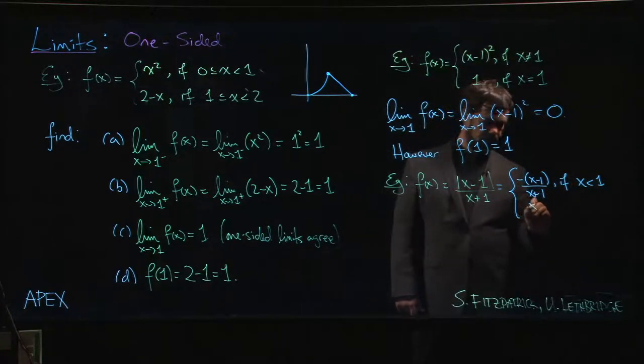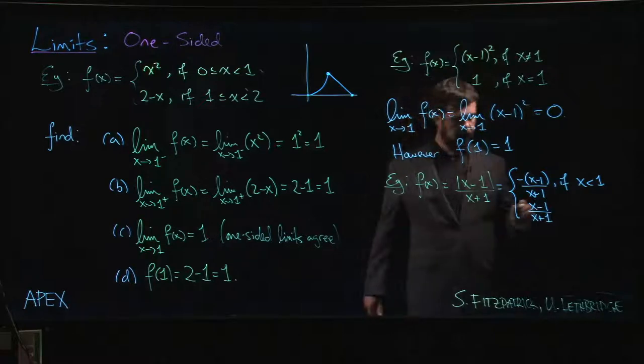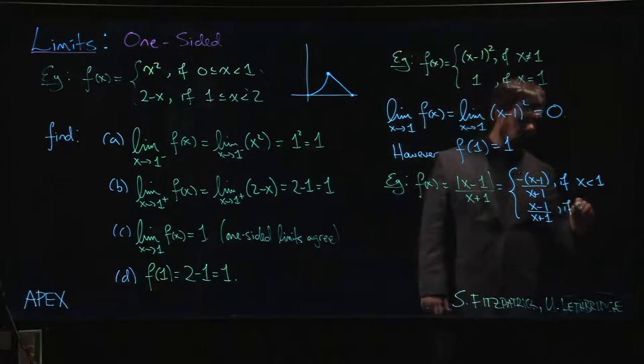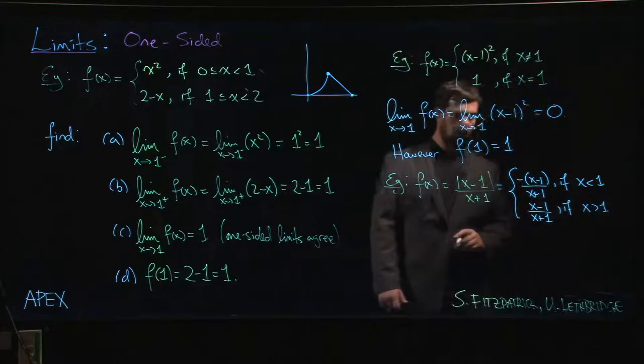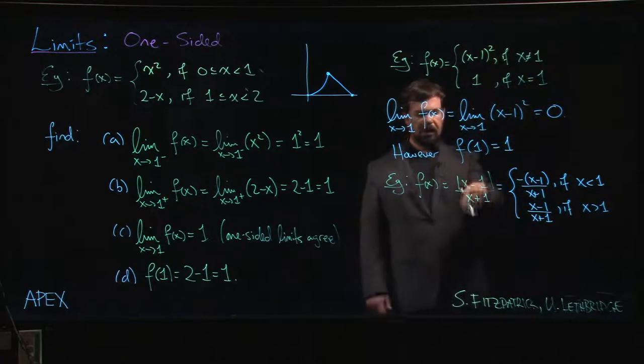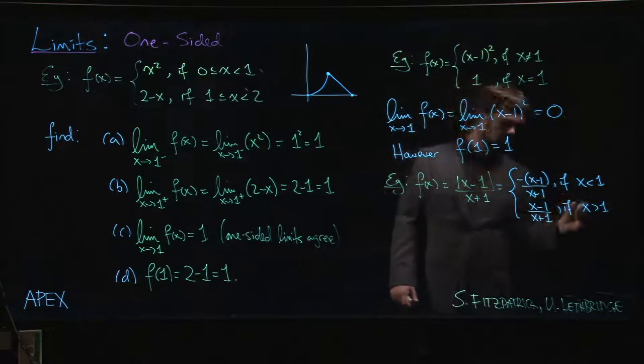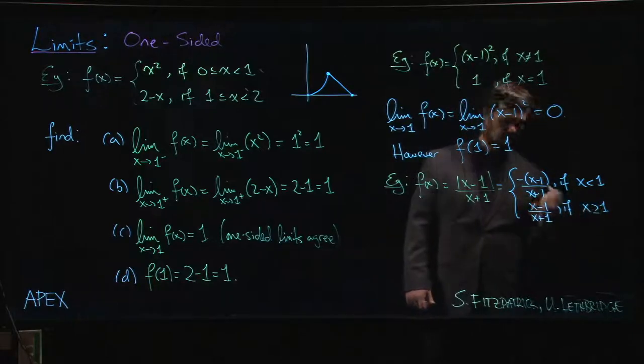If x is bigger than one, the expression is already positive so the absolute value doesn't have to do anything. We leave it as x minus one, and that's valid if x is bigger than one. And if x is equal to one, we get zero either way. You can put the equals whichever one you want, let's put it down there.